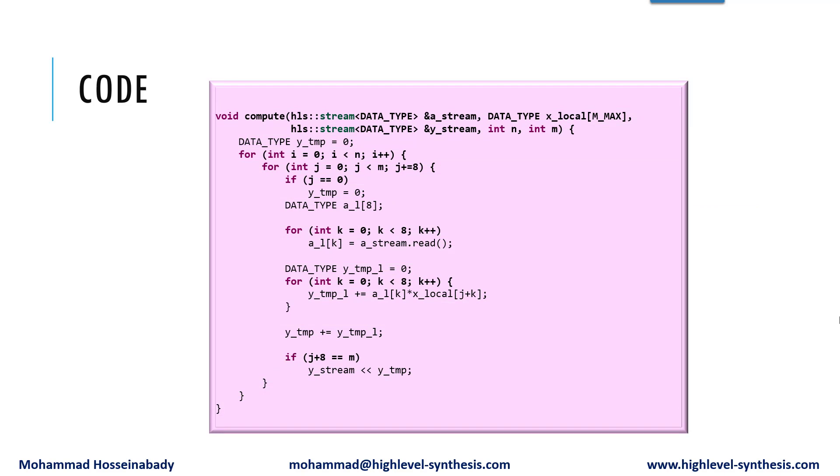To address the high initiation interval of the loop nest in the compute function, you can partially unroll the inner loop 8 times. This partial unrolling mechanism will compensate for the negative impact of the high initiation interval. This code represents the partially unrolled inner loop. You can find the complete code on my GitHub site, which its address is mentioned under this video.